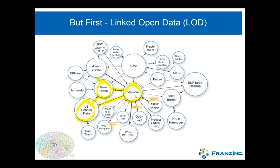For that I need three databases. I need DBpedia, which is the triple version of Wikipedia, where I can find the place where Obama was born. That place will have a GeoNames ID. I can go to the GeoNames database — which has 7 million places on Earth with latitude, longitude, and more — and find all places within 10 miles of Obama's birthplace. Then I ask the U.S. Census database for the median income in those places.